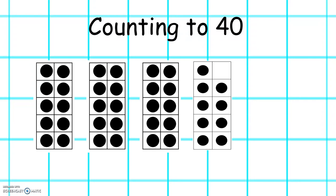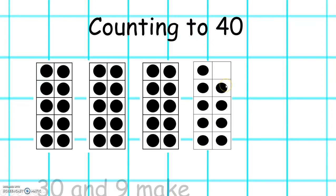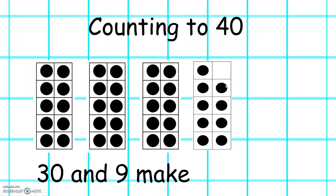Let's look at this one. We have 10, 20, 30, 31, 32, 33, 34, 35, 36, 37. So 30 and 9 make 39.